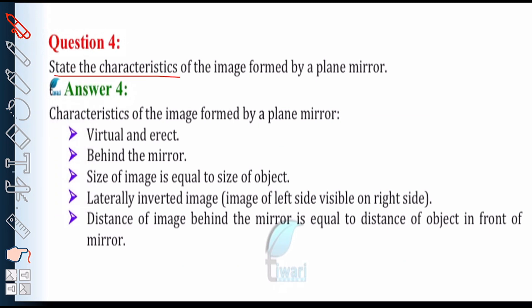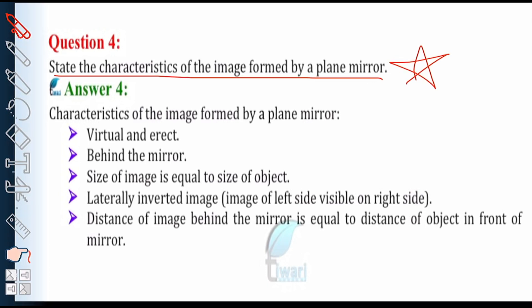Question number 4: state the characteristics of the image formed by a plane mirror. The characteristics of the image formed by a plane mirror are as follows. First: the image is virtual and erect. Virtual means the image is formed behind the mirror. Erect means it is upright, that is straight.